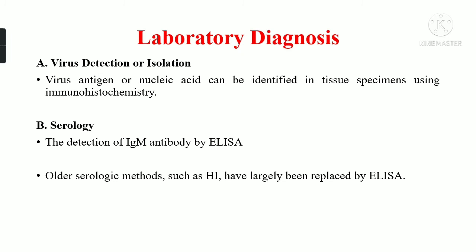For laboratory diagnosis, virus detection can be performed by immunohistochemistry methods, or we can perform serology for the detection of IgM antibodies. Earlier, methods like hemagglutination inhibition were also used; however, these have now largely been replaced by ELISA methods.